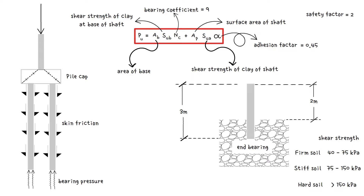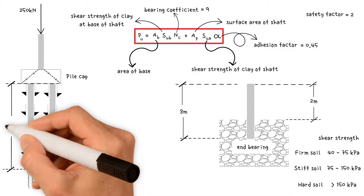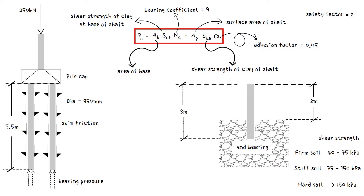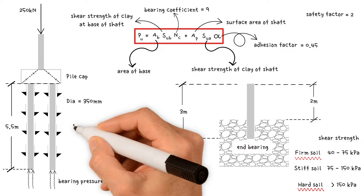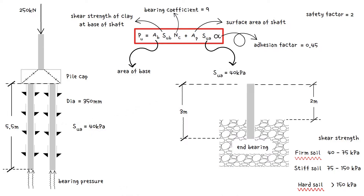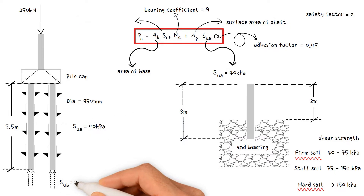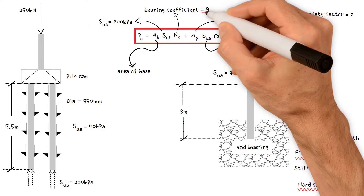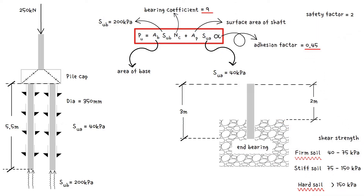We'll take a look at a worked example based on the formula we talked about earlier. A column load of 250 kN is transferred to the pile cap, which is supported by two 5.5-meter long piles with 350 mm circular precast diameters, assumed to be in firm soil and driven onto hard clay. According to the site investigation report, the soil has a shear strength of clay of shaft of 40 kN/m² and an undrained shear strength of clay at base of 200 kN/m².